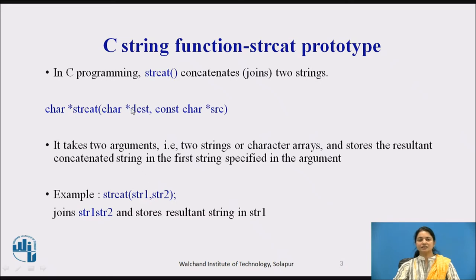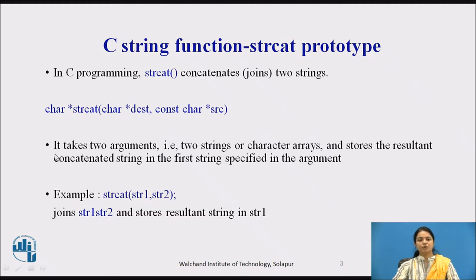The C string function strcat is used to concatenate two strings — it joins two given strings. The prototype or syntax of strcat is: character pointer strcat, with a destination pointer and a source pointer. It takes two arguments, that is, two strings or character arrays, and stores the resultant concatenated string in the first string specified in the argument.